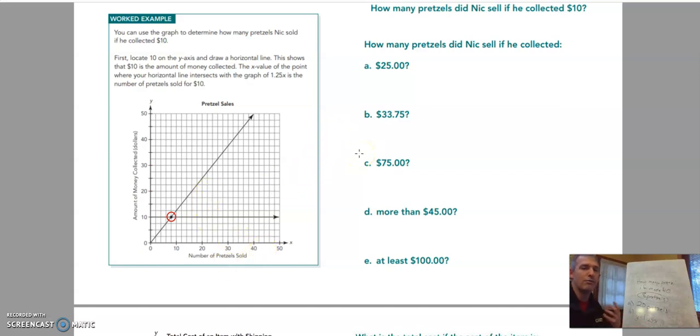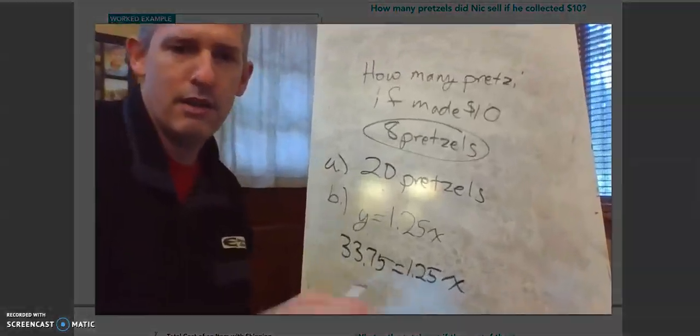Or I could go backwards. I could start by writing my $33.75 that I made and figure out what x would need to be, the number of pretzels sold, to get that $33.75. So let's do a little bit of the math, and let's figure that out.